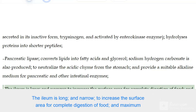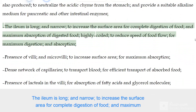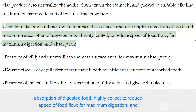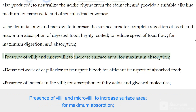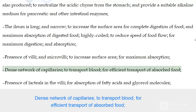The ileum is long and narrow to increase the surface area for complete digestion of food and maximum absorption of digested food. It is highly coiled to reduce the speed of food flow for maximum digestion and absorption. The presence of villi and microvilli further increases surface area for maximum absorption, along with a dense network of capillaries for efficient transport of absorbed food.